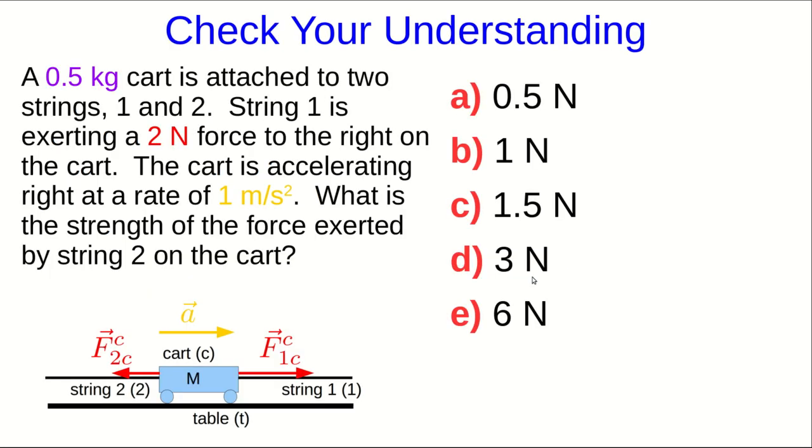The case I just showed you is about as simple as things ever get. So now to check your understanding, have a look at this situation that's just a little bit more complicated. So here is the same cart. It still has the two newton force acting on it to the right, but now there's another force acting to the left. And the cart is accelerating to the right at one meter per second squared. So find the strength of the force that's exerted by the second string.